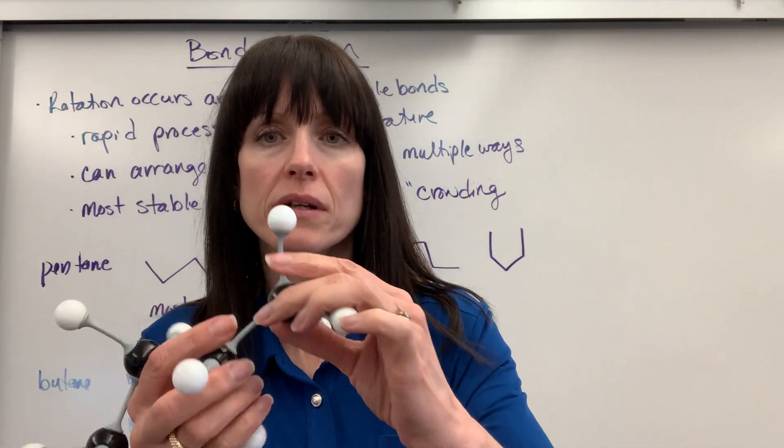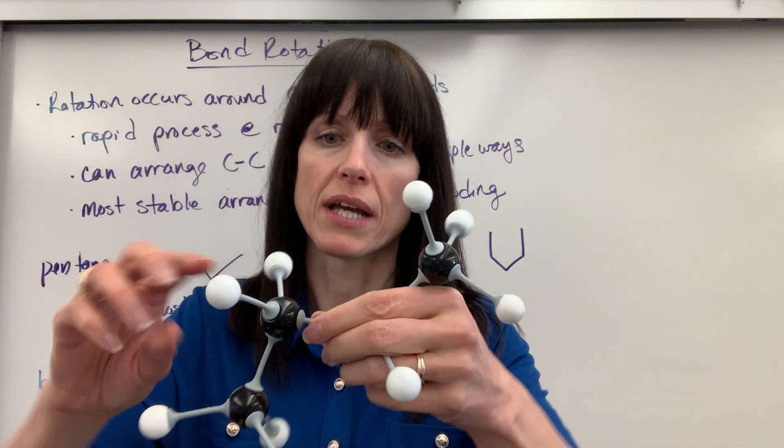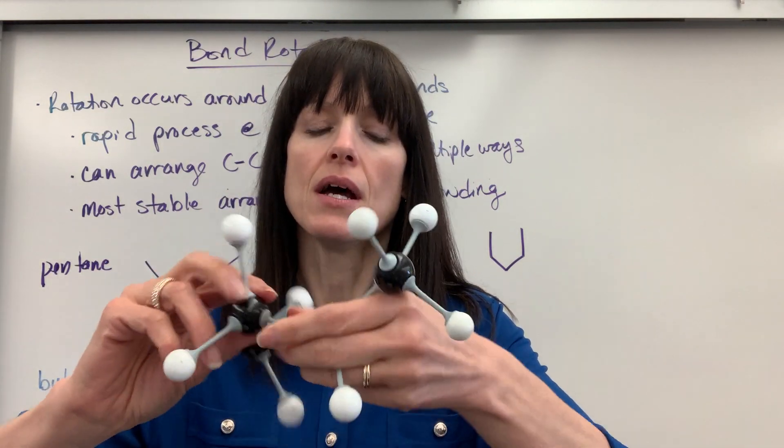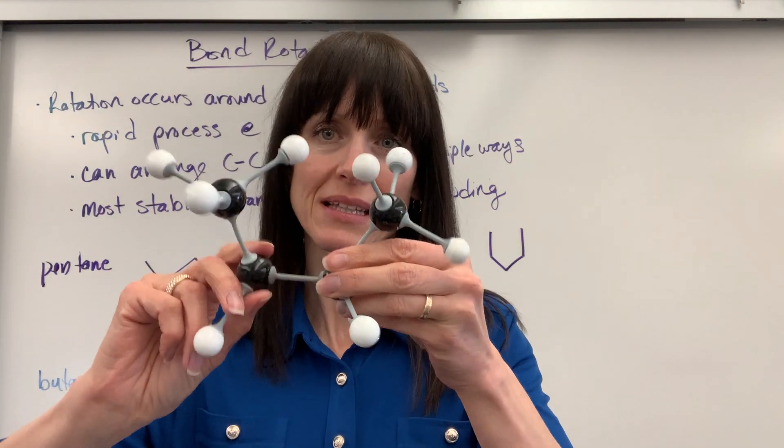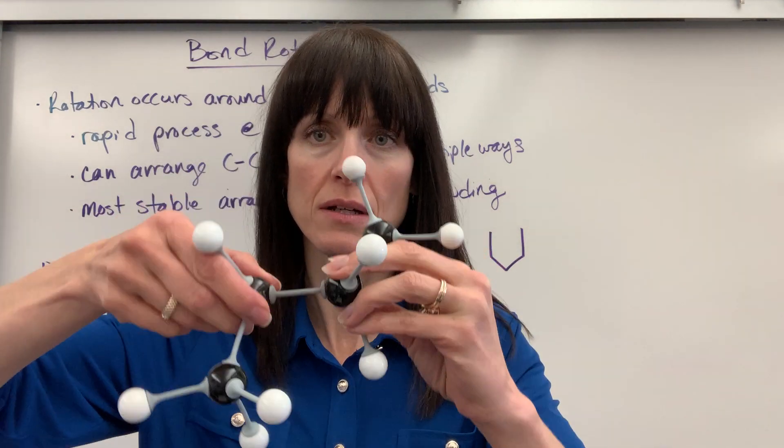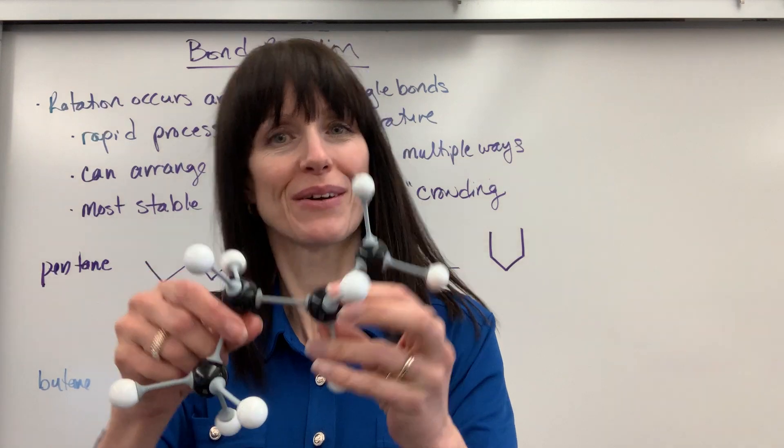So these single bonds, every single one of these bonds, the carbons can rotate. Every single one can spin. But the most stable will always be with the least amount of crowding. There's crowding. There's your least amount of crowding.